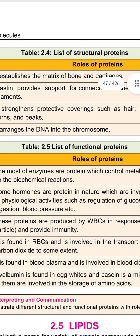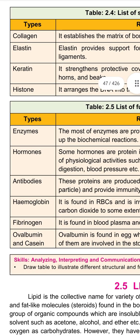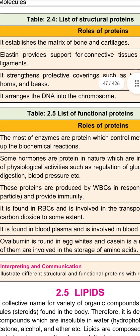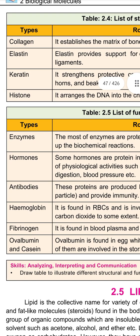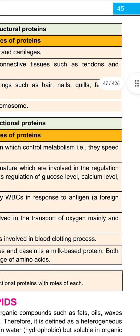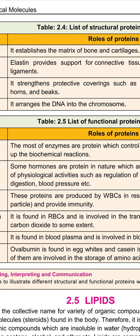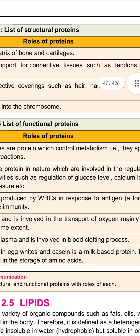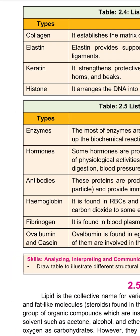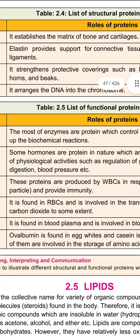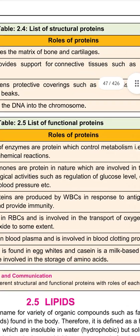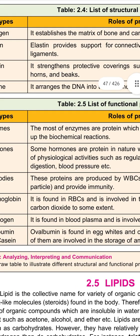Table 2.5 lists functional proteins. Most enzymes are protein in nature and control metabolism — they speed up biochemical reactions occurring in the organism. Hormones are also protein in nature and are involved in regulation of physiological activities such as regulation of glucose level, calcium level, digestion and blood pressure.